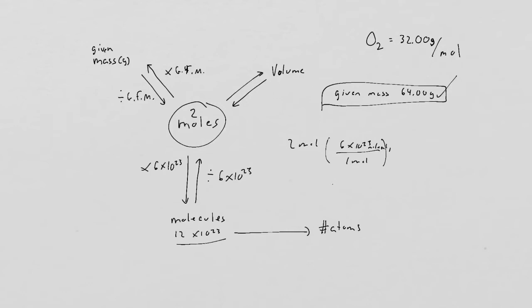What about volume? Well, same idea. If I have two moles, well, what volume is that? Well, at this point, you know one mole is 22.4 liters of a gas at STP. So how much is 2 moles? Well, it's 44.8.